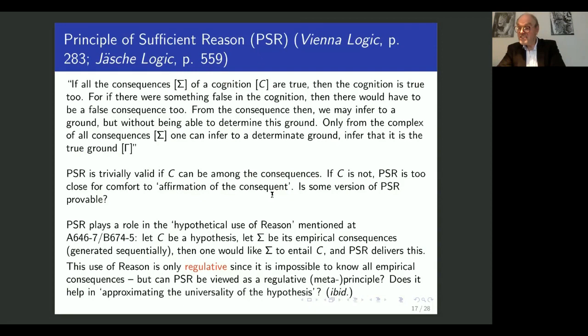Right. And so this is the time to introduce the reasoning pattern that has fascinated me since I encountered it. I'll first read it to you and then explain why one can become fascinated by this. If all the consequences of a cognition are true, then the cognition is true too. For if there were something false in the cognition, then there would have to be a false consequence too. From the consequence then we may infer to a ground, but we are being able to determine this ground. Only from the complex of all consequences, one can infer to a determinate ground, infer that it is the true ground. And ground here means is used in such a sense that it entails the truth of the cognition.